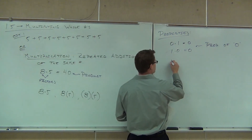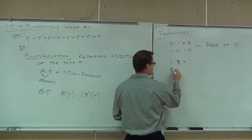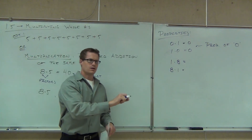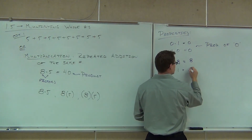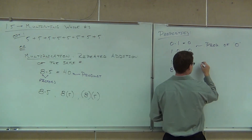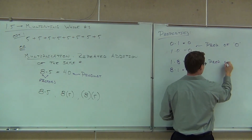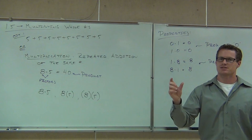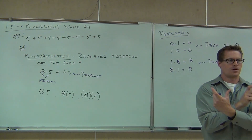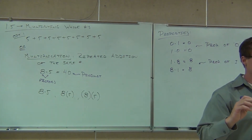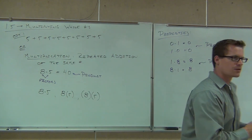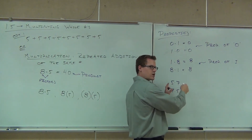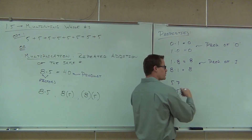What if you multiply a number by one — either one times eight or eight times one? That gives you eight. Any time I multiply by one, I get that number back. That's an identity — I always get the same thing back. This is the property of one for multiplication. Now, does it matter if you multiply five times seven or seven times five? You're not going to get different answers. Are you starting to see similarities with addition? Subtraction was not the same if you reversed it, but addition was. Both addition and multiplication are what we call commutative.